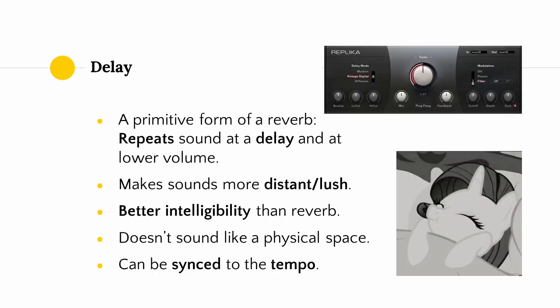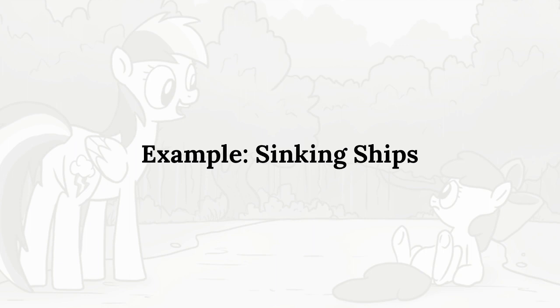A delay can be thought of as a more primitive form of reverb. What a delay does is simply repeat a sound it receives at a delay and at a lower volume. Delays allow you to achieve similar practical effects as reverb — they can make a sound feel more distant, but with better intelligibility than reverb, though they sound nothing like an actual space. An interesting thing you can do with delays is sync them to the tempo of your song, so delays can also be used to emphasize certain rhythms or make your song rhythmically feel tighter. One example of where I use delays artistically is in my cover of Sinking Ships, where I use a delay to emphasize certain words in the chorus.